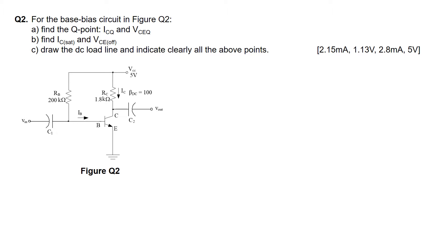We are given a base bias circuit in figure Q2. For part A of this question we are supposed to find the Q point, which is the coordinates ICQ and VCEQ. In part B we are supposed to find the IC saturation current as well as the VCE off. In part C we are to draw the DC load line and indicate clearly all the above points.